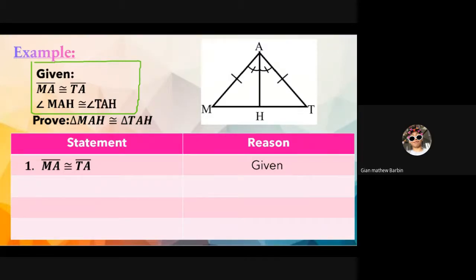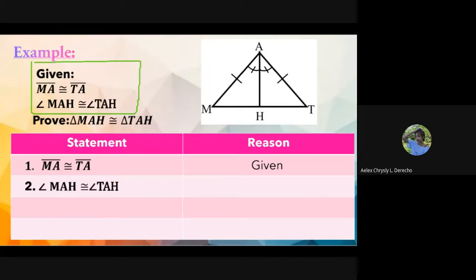For the second statement, look at the given again. Diretso answers: angle MAH is congruent to angle TAH. Blanco answers: the reason is given. We have now written all the given statements. For statement number three, if there is no more given, look at the figure.